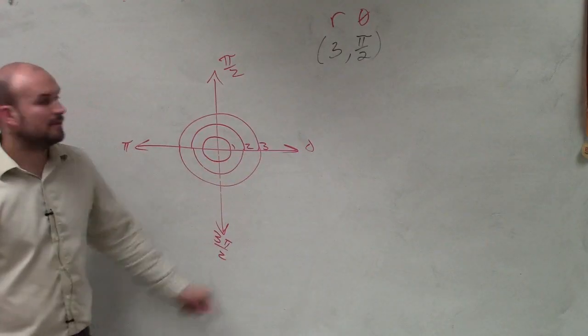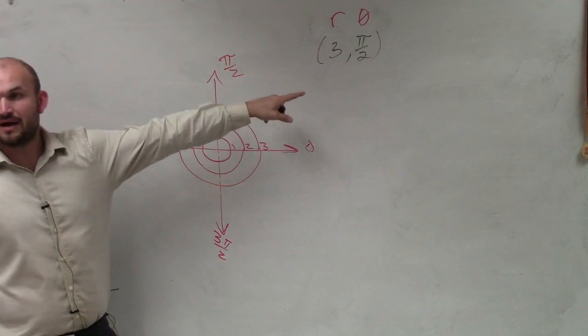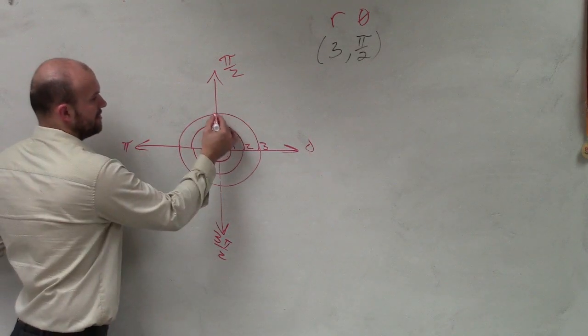OK? So remember, the radius tells us 3, so that means we're going to be on this outer ring. And then the angle is pi halves, so it's going to be up here.